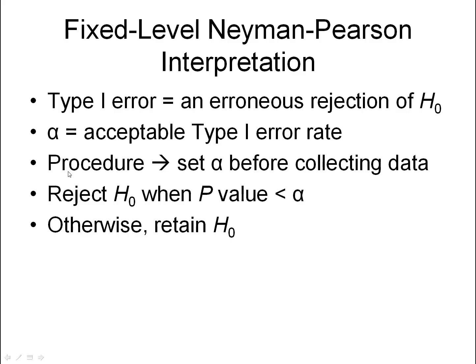So the procedure we use is to set alpha before collecting data. Then, after collecting the data and calculating the p-value, we will reject the null hypothesis when the p-value is less than alpha. Otherwise, we retain the null hypothesis.